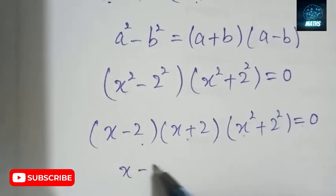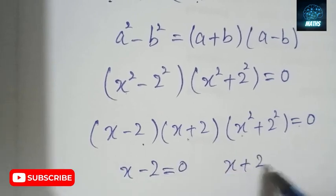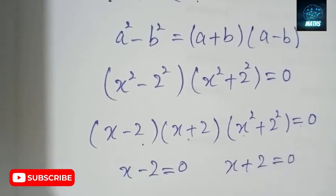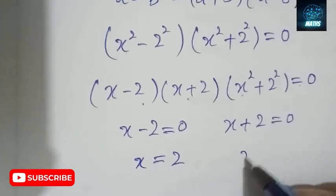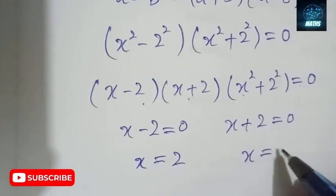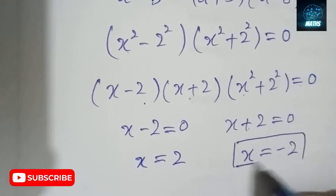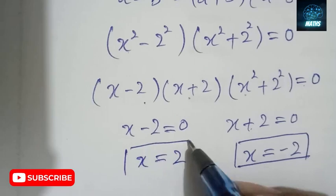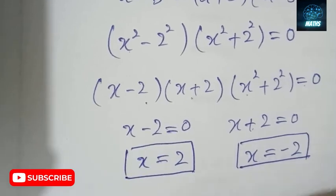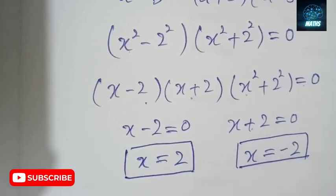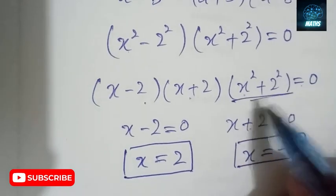From (X - 2)(X + 2) = 0, we get X = 2 and X = -2. So here we find two real roots, but our equation has degree four so we need to find all four roots.